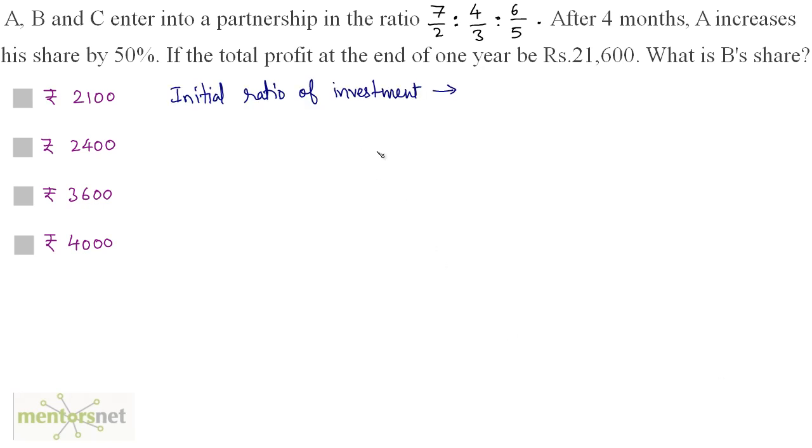We have been given the initial ratio of investment which is 7 by 2 is to 4 by 3 is to 6 by 5. I am multiplying each ratio by 2 times 3 times 5. I can cancel out the terms, so we have the initial investment ratio as 105 is to 40 is to 36. I can say that A invested 105X, B invested 40X and C invested 36X.